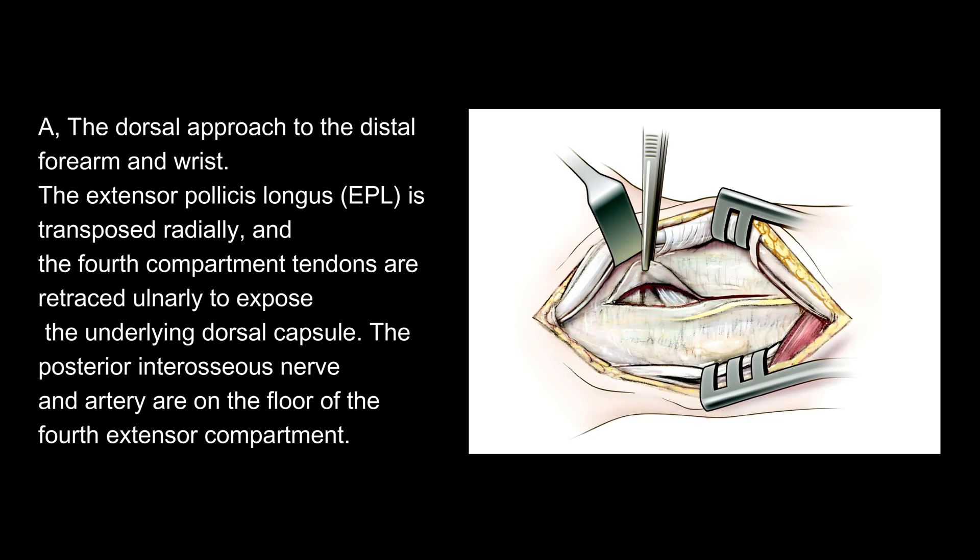The dorsal approach to the distal forearm and wrist: the extensor pollicis longus (EPL) is transposed radially, and the fourth compartment tendons are retracted ulnarly to expose the underlying dorsal capsule. The posterior interosseous nerve and artery are on the floor of the fourth extensor compartment.